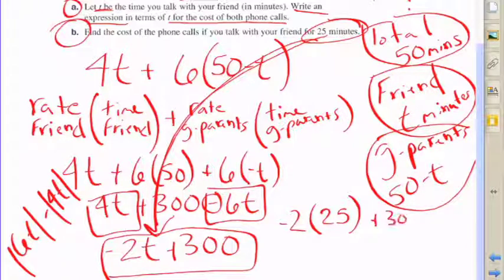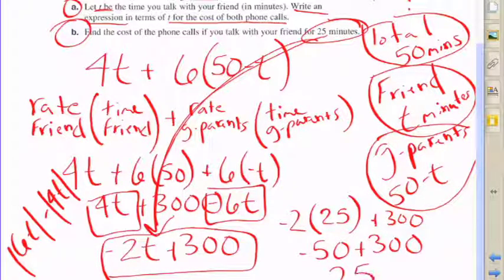If you remember, we use t to represent the time that you spoke with your friends, so we're going to plug 25 in for t into the expression. Negative 2 times 25 instead of negative 2 times t.